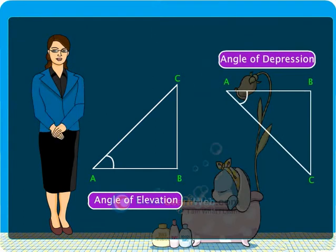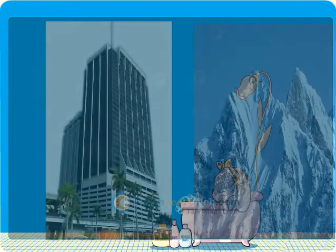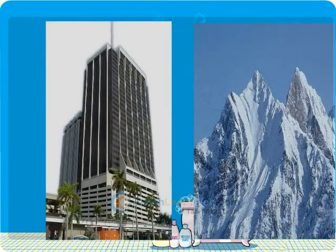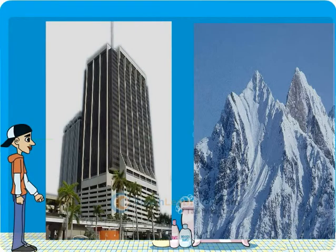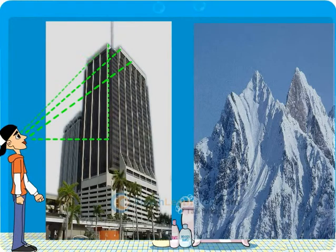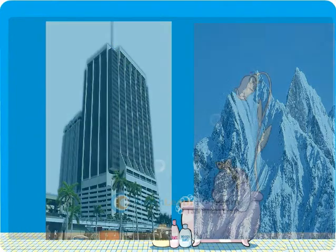All the objects such as towers, mountains, etc., shall be considered as linear for mathematical convenience. The height of the observer is neglected.